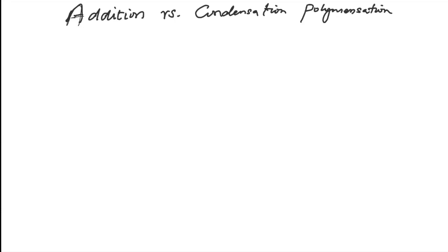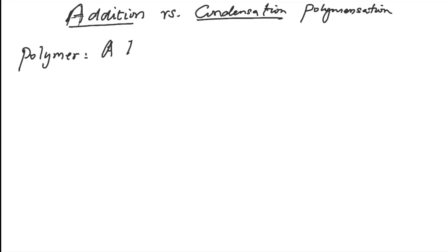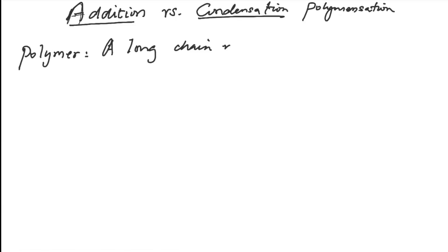Welcome to Chem with Chem. In this session we'll be looking at addition versus condensation polymerization. First thing to note is what a polymer is. Looking at the word polymer, you should see the prefix 'poly' which means many, and 'mer' which comes from monomer unit. So it's really a long chain made up of 50 or more smaller units called monomer units.